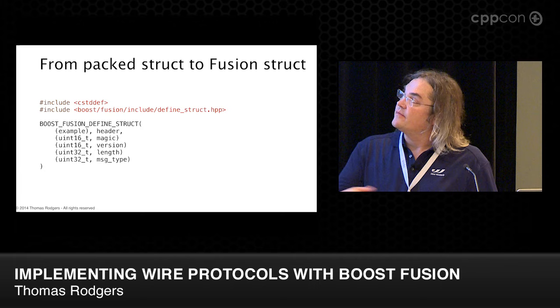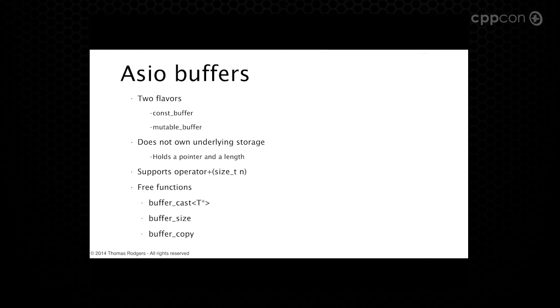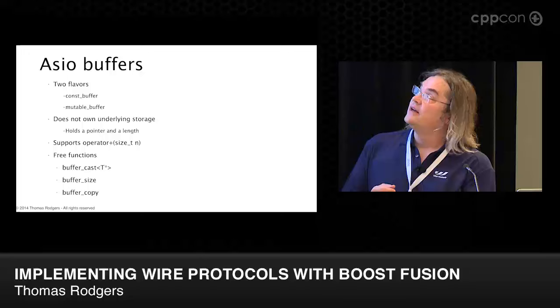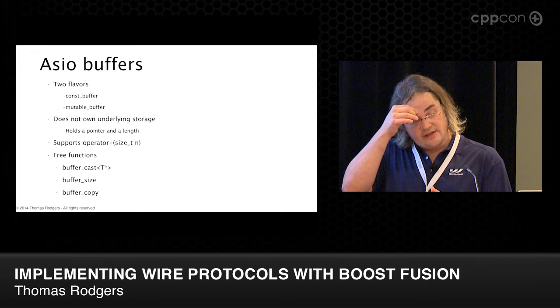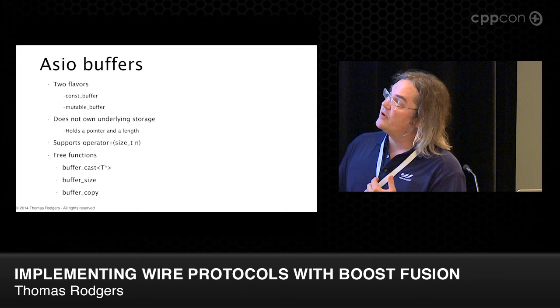Before going further, I want to talk about ASIO buffers. A lot of the code I write relies on ASIO. Two types exposed from this library used in my code samples are const_buffer and mutable_buffer. They are non-owning types — they don't own the underlying storage. They only contain a pointer to some data and a length. They support an addition operator, which allows returning a new buffer given an offset from the start, allows casting to a given T*, returning the buffer size, and copying one buffer to another.